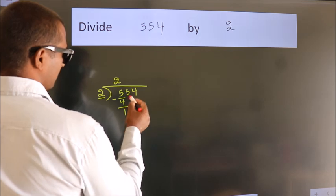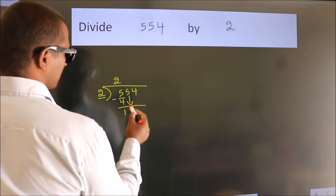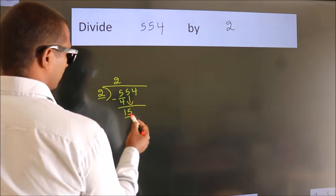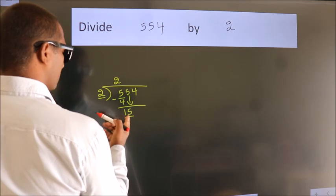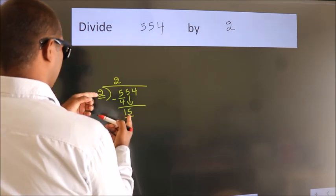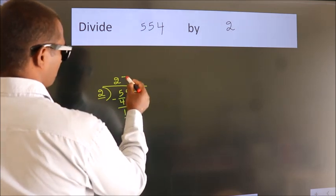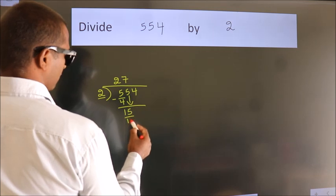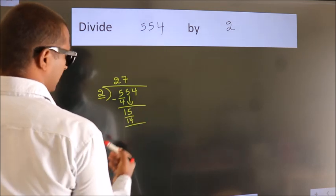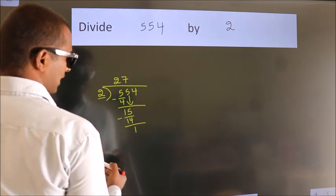After this, bring down the beside number. 5 down, so 15. A number close to 15 in 2 table is 2 7's 14. Now we subtract. We get 1.